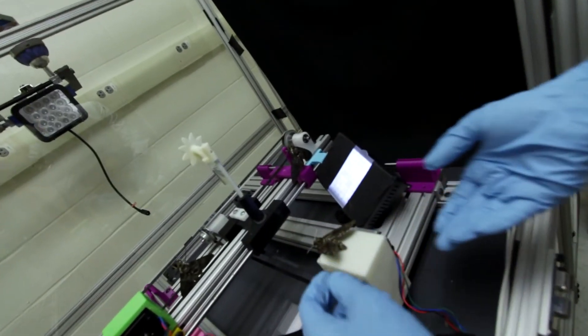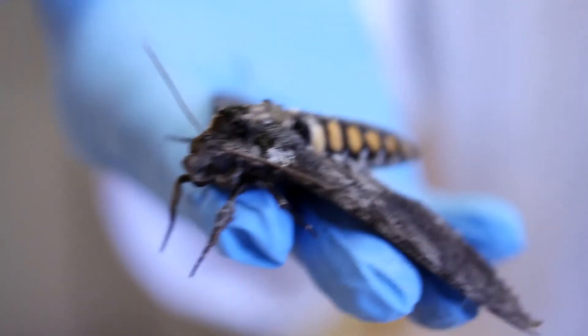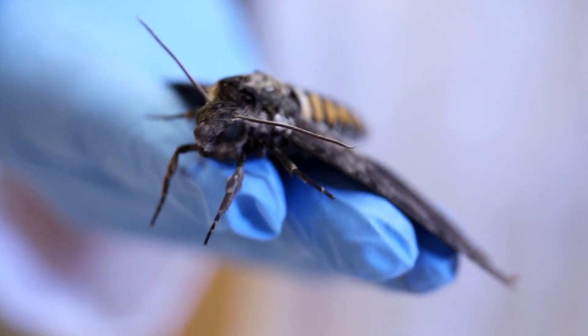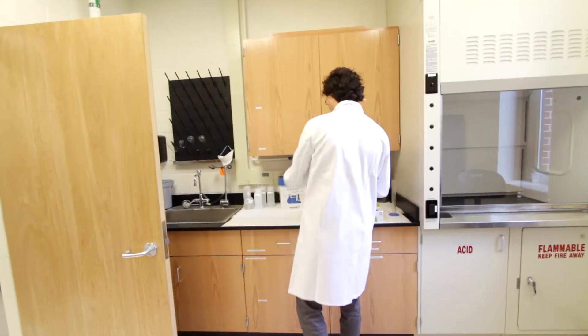And I think one of the big challenges now is to figure out how are the neural systems of animals and the mechanical systems of animals working together in order to enable this really exquisite level of adaptation and behavior that we see in the natural world.